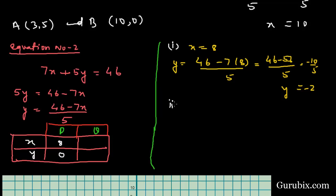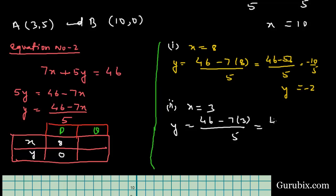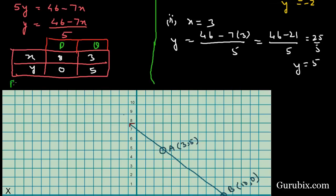For the second solution, we put x = 3. Then y = (46 − 7×3) / 5 = (46 − 21) / 5 = 25 / 5 = 5. So when x = 3, y = 5. The coordinates of P are (8, −2) and the coordinates of Q are (3, 5).